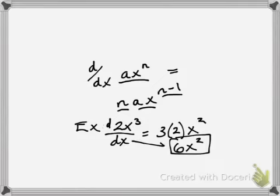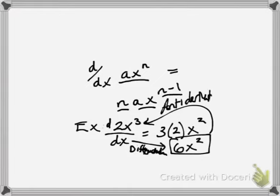When we go in this direction, it's called differentiation. And when we go in this direction, it's called anti-derivative. We can see that the anti-derivative of 6x squared is 2x to the 3, because we just differentiated 2x to the 3 to get 6x squared.